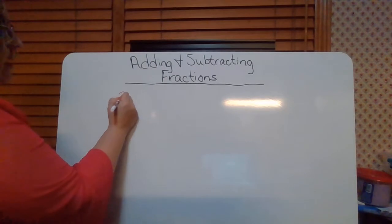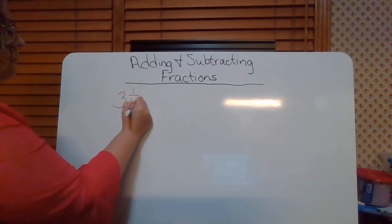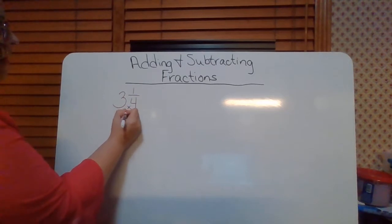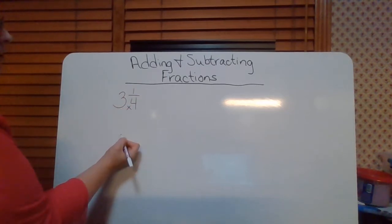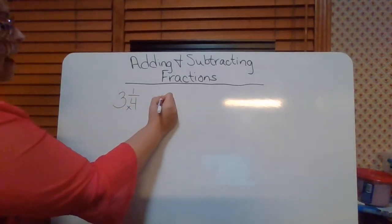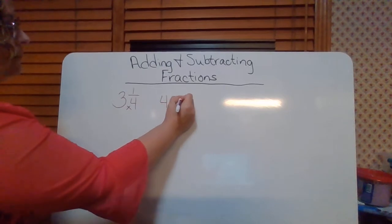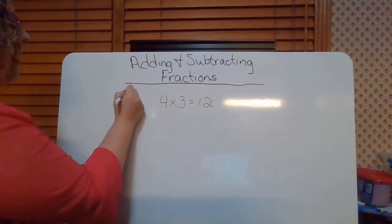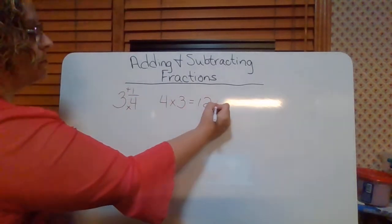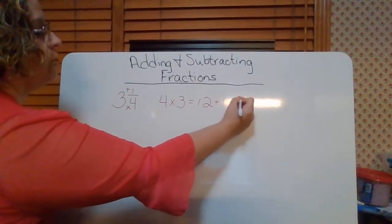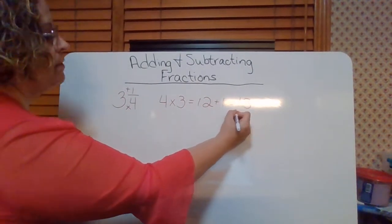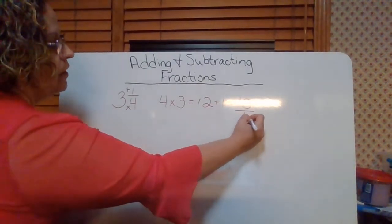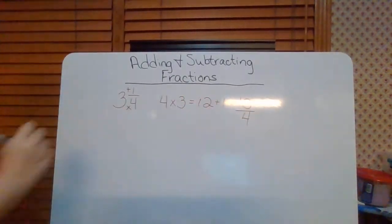So if I have three and one-fourth, remember, you multiply the denominator and the whole number. So I have four times three, which is 12. And then you add that to the numerator, so I'm going to add one. So that's 13, and then it sits right back down on your starting denominator. So that's 13 over four.